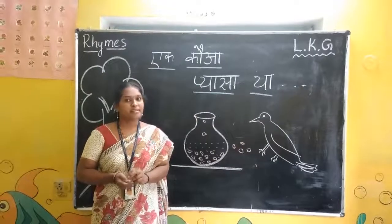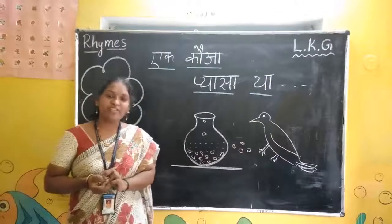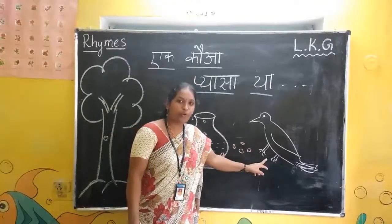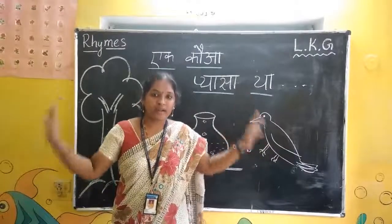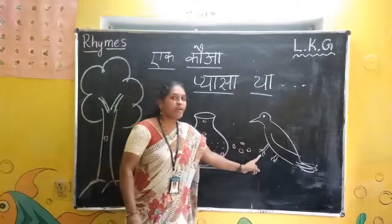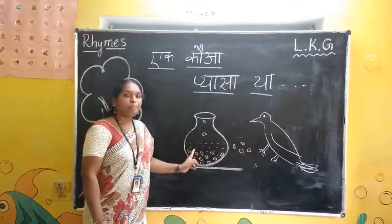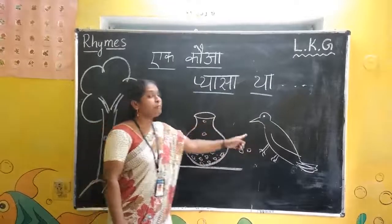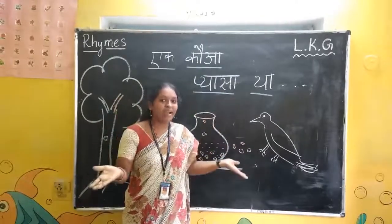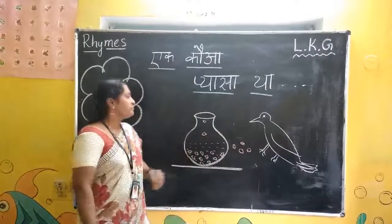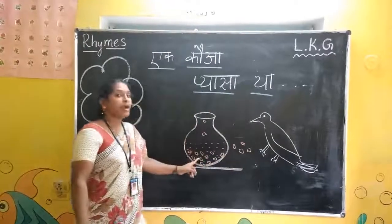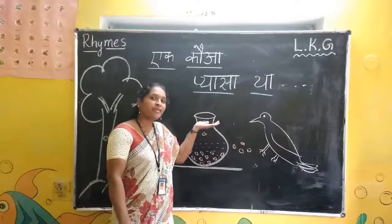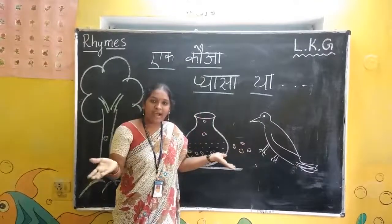Hello everyone. It's rhyme time. Today's rhyme — look at the board. What is this, children? This is a crow. Crow says ka, ka, ka. Let's start. Eka ka ka wa pia sa ta, jad mein tora paani ta. Ka ka wa da la ka unkar pani aya oopar. Ka ka pia paani ka ta ho gai kaani.